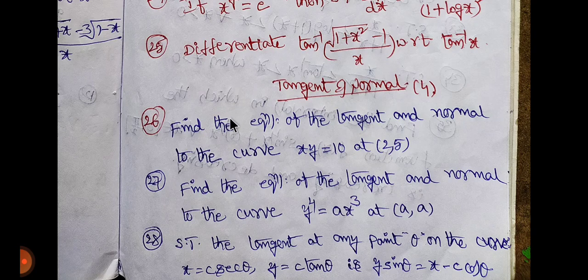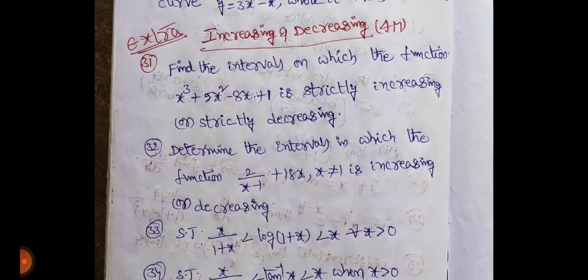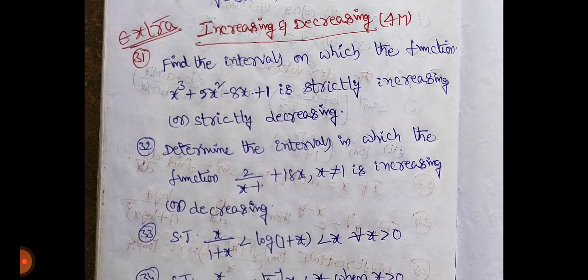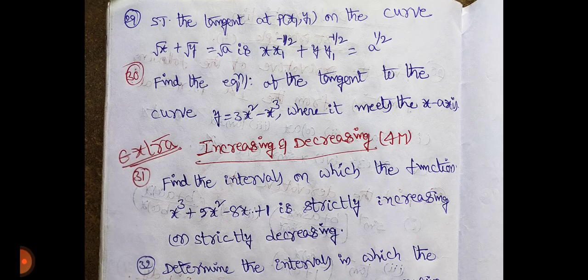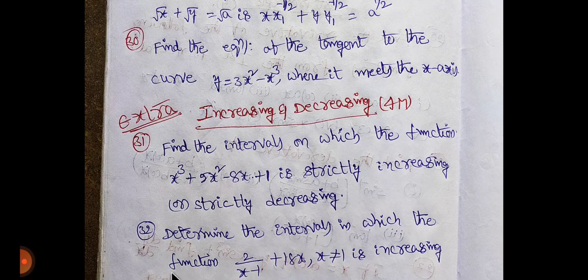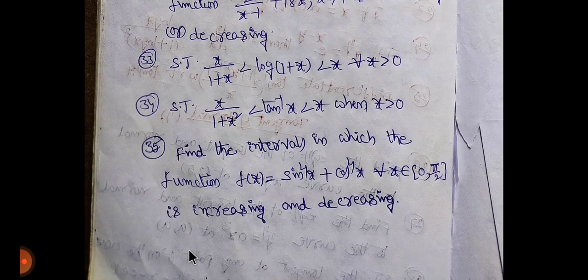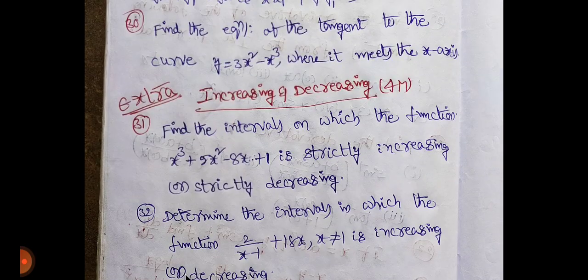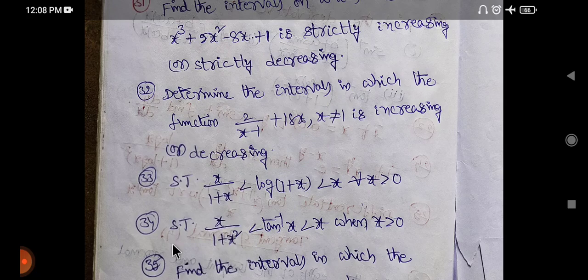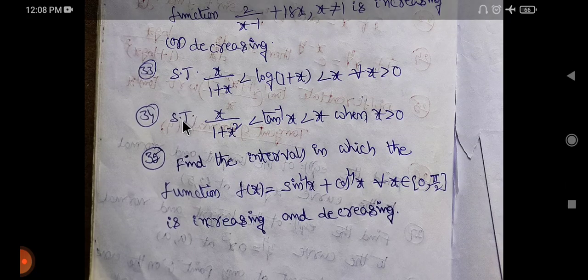Tangent and normal. Tangent and normal. Find the equation of tangent and normal - how to find, what are the formulas. Tangent and normal. Next, tangent and normal. Increasing and decreasing: f dash of x greater than 0, f dash of x less than 0. 35 change.